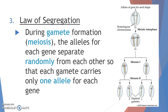This law states that during gamete formation — so during meiosis — the alleles for each gene separate randomly from each other, so that each gamete only carries one allele. After interphase, when your homologous pairs are made and form, they will separate during meiosis so that you only get one parent's homologous chromosome in one cell and the other in the other cell. After the second mitotic division, you end up with four cells, each containing one chromosome and therefore only one allele for that gene.